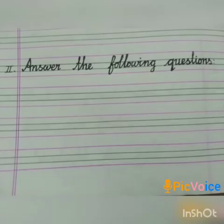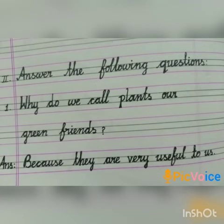Next, Roman numeral 2: Answer the following questions. The answers are already in your book — check them. First question: Why do we call plants our green friends? Answer: Because they are very useful to us.